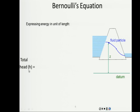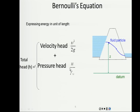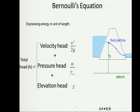Expressing energy in units of length — the head — gives us three components. First is the velocity head, v squared divided by 2g. Second is the pressure head, which is pore pressure divided by the unit weight of water, yielding a length. Third is the elevation head z, measured above the selected datum.